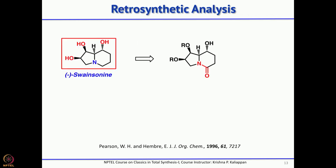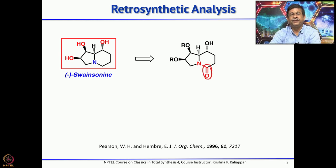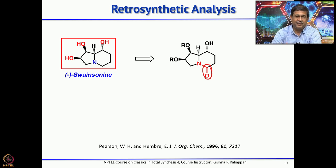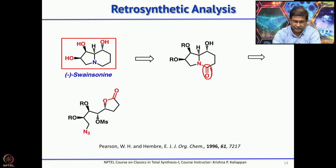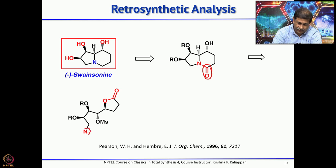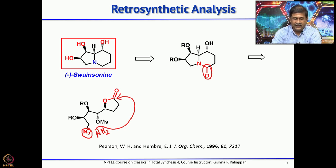From a retrosynthetic point of view, the first disconnection introduces a carbonyl group to form the lactam, because reducing the lactam to the corresponding amine is easy and straightforward. This lactam can be easily obtained by having a pyrrolidine as well as a carboxylic acid. This can be obtained from the corresponding azide. The key reaction: if you reduce this N₃ to NH₂, that NH₂, as soon as it is formed, will attack the 5-membered lactam and open it.